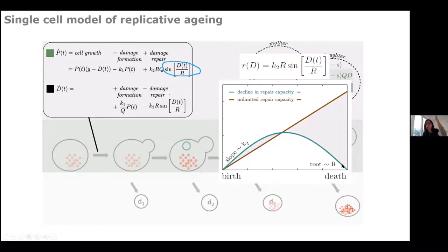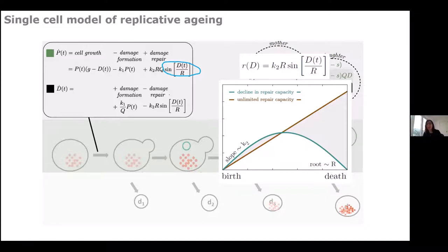Barbara tested two scenarios using a sine function: the first is unlimited repair capacity throughout life, and the second takes only the first half of the sine function, so the cell reaches a peak repair capacity and then declines toward death. We could also steer the slope — how fast repair happens at the beginning — to compare strategies: repairing damage very fast early and releasing it toward the end, versus a slower pace increasing at mid-life.